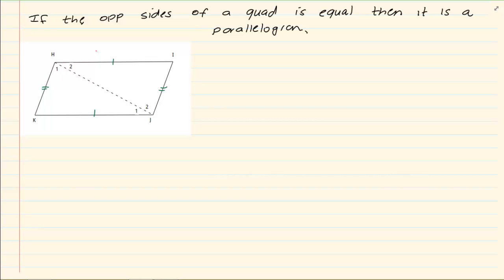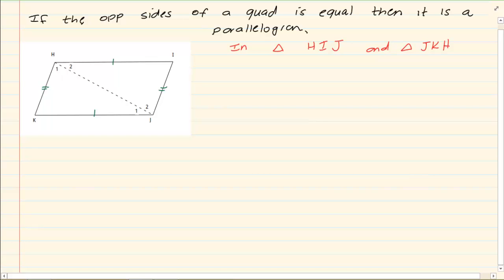If you look in triangle HIJ and then we are looking at triangle JKH, we have that HI is equal to KJ. Why? Because it was given to us. This was given information.